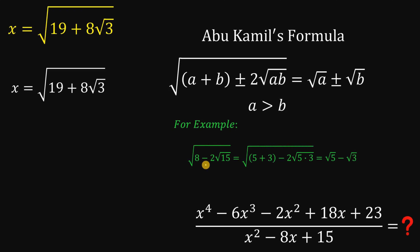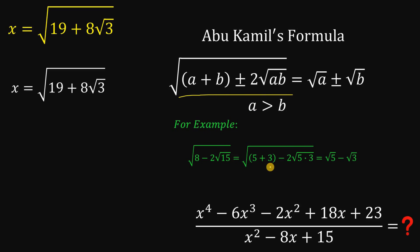For example, we have the square root of 8 minus 2 times the square root of 15. This 8 we can rewrite as 5 plus 3, and this 15 we can rewrite as 5 times 3. Using Abou Camille's formula, we can say that the square root of 8 minus 2 times the square root of 15 is equal to square root of 5 minus square root of 3.